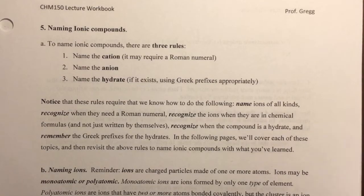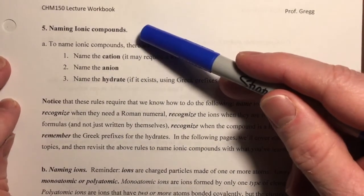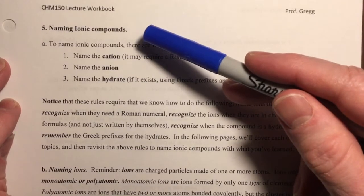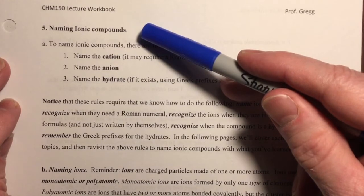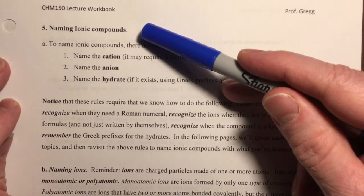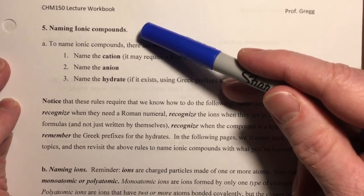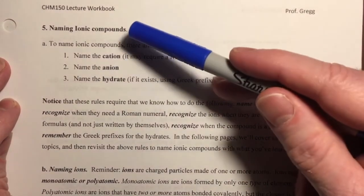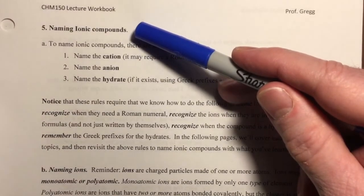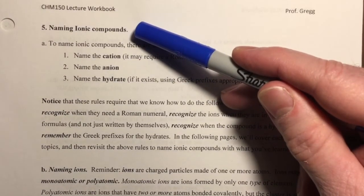Hello, students. In this video, we're going to move on from naming covalent compounds to naming ionic compounds, expanding into the second of the three categories of chemical species. Recall that we have A, acids; B, ionic compounds; and C, covalent compounds. We are covering those three categories in reverse order. We've already covered the naming rules for covalent compounds, and now we're going to cover the nomenclature for ionic compounds.